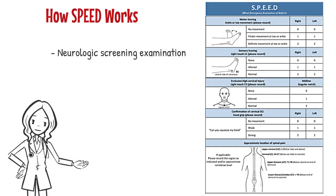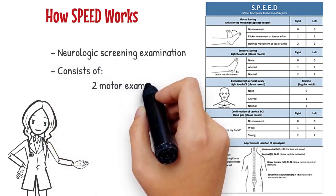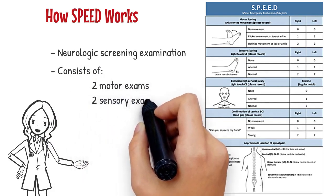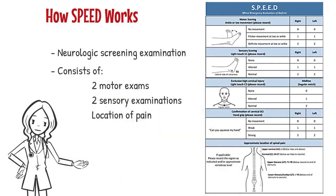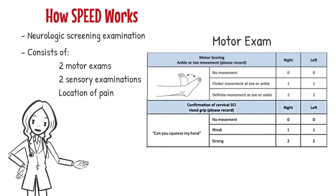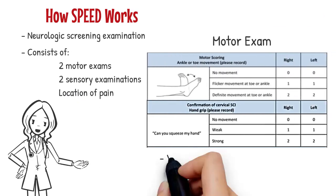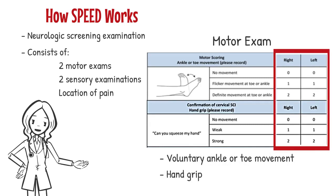SPEED is designed to be a screening examination and should be superseded by the findings of a subsequent complete neurological exam once it can be performed. SPEED uses two simple assessments of motor function and two simple assessments of sensation combined with the location of pain along the spinal cord to determine the level of injury. The motor exam involves two simple assessment techniques: voluntary ankle or toe movement and hand grip.